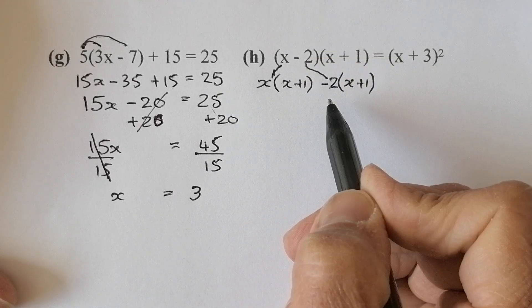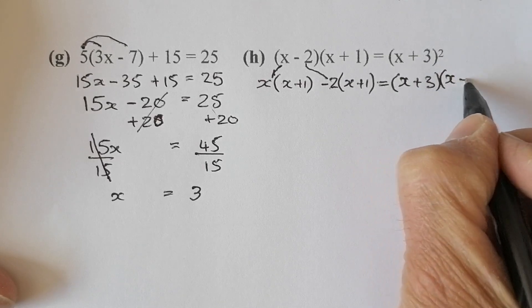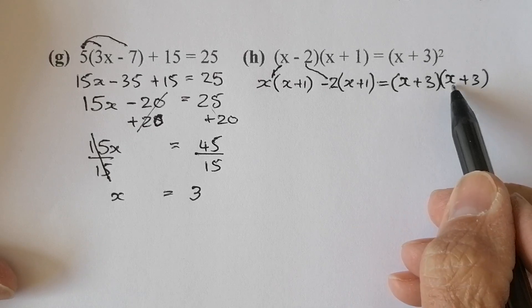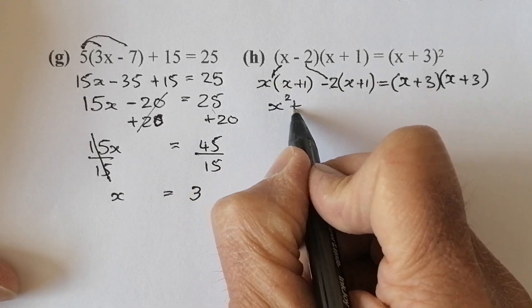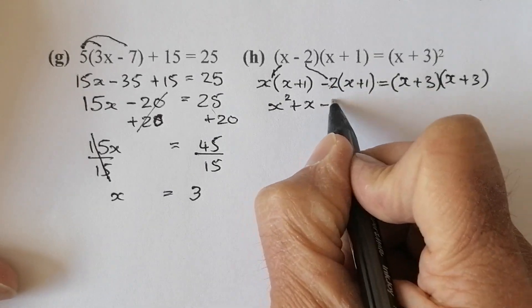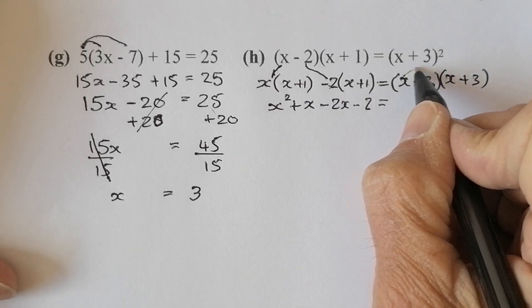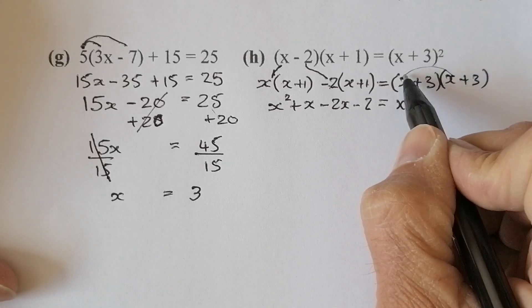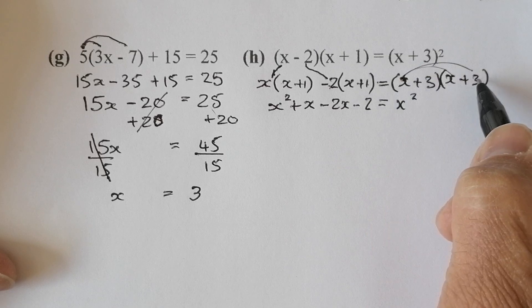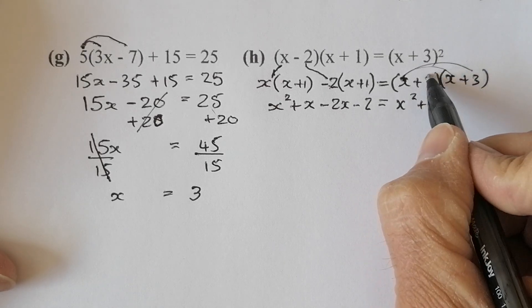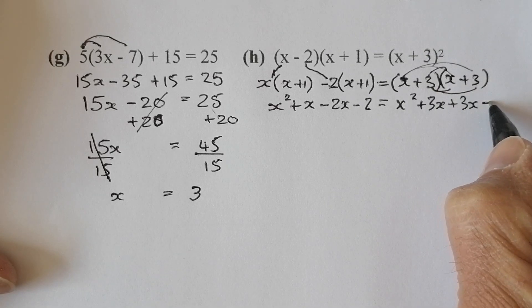This will work out to be FOIL in the next line. On the right-hand side, I'm going to multiply it out by FOIL — although there is a quick method for a squared bracket, I'll just use FOIL. So splitting the left side: x times x gives me x squared; x times 1 gives me plus x; minus 2 times x gives me minus 2x; minus 2 times 1 gives me minus 2. On the right side by FOIL — firsts: x squared; outers: x and 3 gives plus 3x; inners: 3 times x gives plus 3x; lasts: 3 times 3 gives 9.